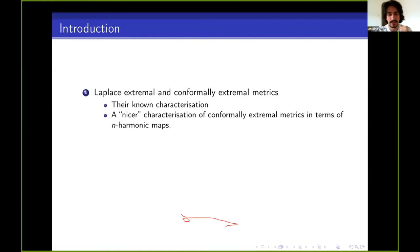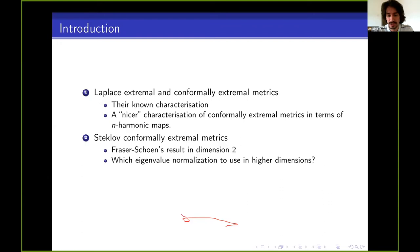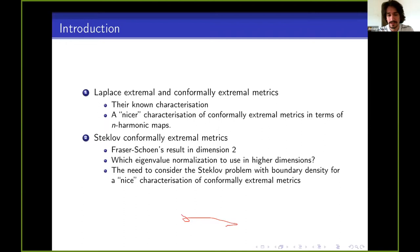In the Laplace case, I'll give a nicer characterization of conformally-extremal metrics in terms of n-harmonic maps, because the characterization that's usually been used is in terms of some other geometric objects that we believe is not a nice object to deal with. We propose a new, nicer characterization. Then I'll explain the Steklov case for Steklov-conformally-extremal metrics, starting with Fraser-Schoen's result in two dimensions, which is the main result that started the whole research in Steklov-extremal metrics. Then we'll look at what normalization we need in higher dimensions and the connection to n-harmonic maps and boundary density.